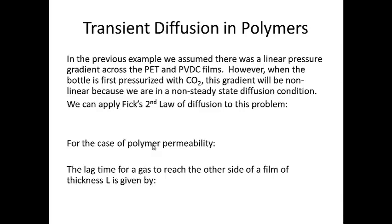Our assumption behind the last example was that we had a linear pressure gradient across the PET and PVDC films. But when the bottle is first pressurized, the gradient will be nonlinear, because you have a non-steady state diffusion condition. In other words, you'll have very high concentrations of CO2 at the internal wall and very low concentrations of CO2 at the outside of the wall, and a non-linear concentration gradient between the two. For this situation, we need to apply Fick's Second Law.